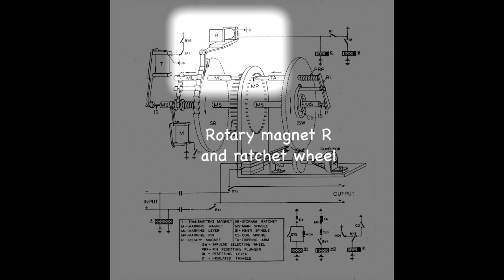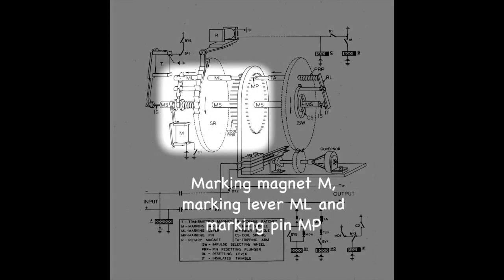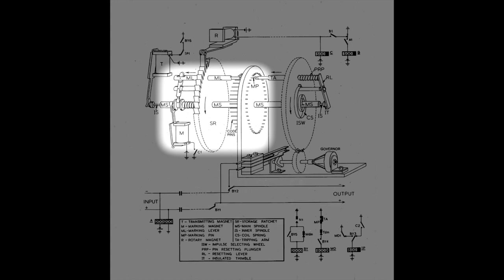At the top is the rotary magnet R and the ratchet wheel. The marking lever ML is attached to that wheel and it follows the rotation. Marking magnet M lifts the marking lever during the stepping of the ratchet wheel. It drops back at the end of the rotation and that pushes the marking pin at that location to the right.